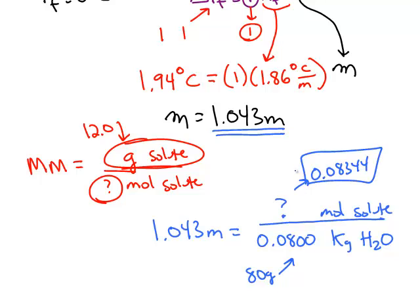So if you use that number for the denominator, you now have both parts to the molar mass. And the molar mass will work out to be 143.8 grams per mole.